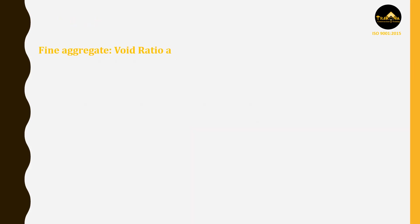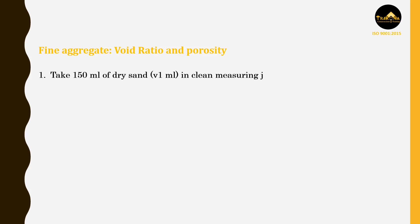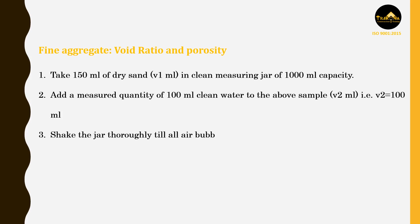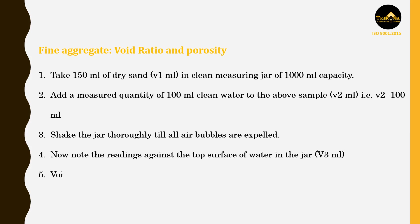Fine aggregate — void ratio and porosity: Take 150 ml of dry sand in a clean measuring jar of 1000 ml capacity. Add a measured quantity of 100 ml clean water to the above sample, that is V2 equals 100 ml. Shake the jar thoroughly till all air bubbles are expelled. Now note the readings against the top surface of water in the jar. Void ratio equals (V1 + V2 − V3) / (V3 − V2). Porosity equals (V1 + V2 − V3) / V1.